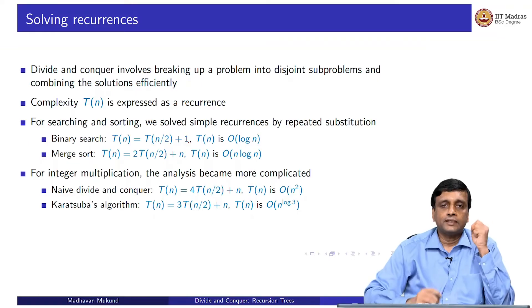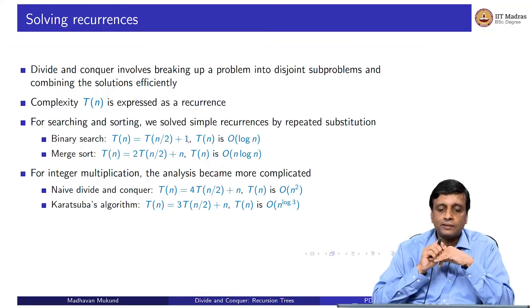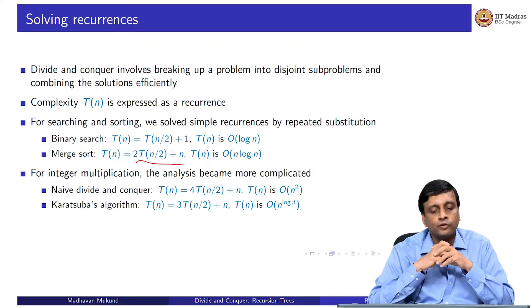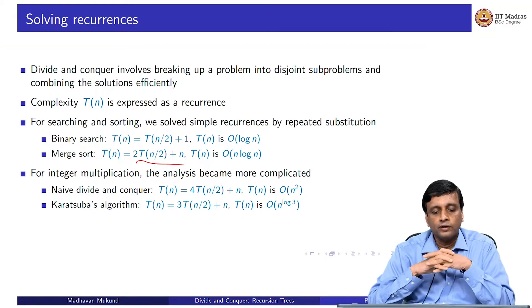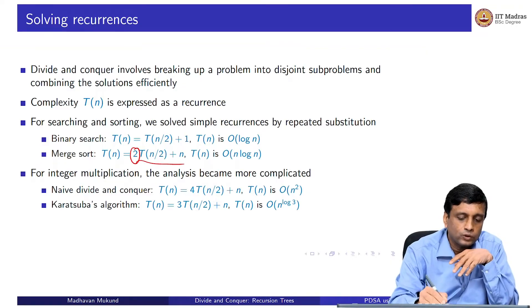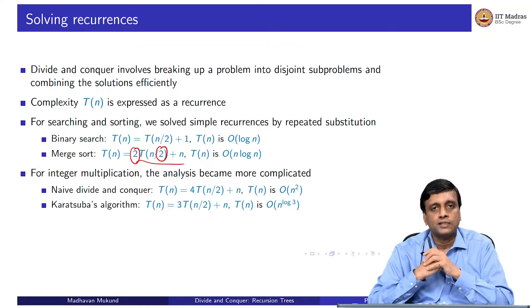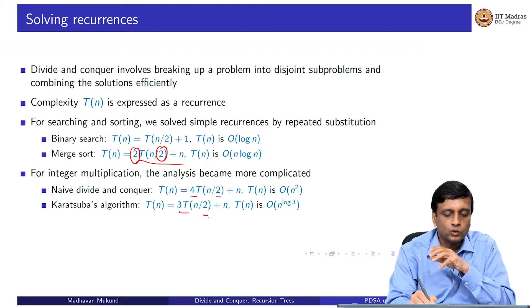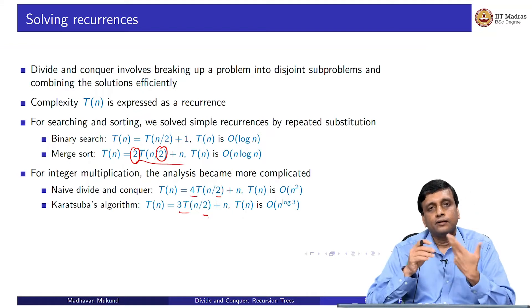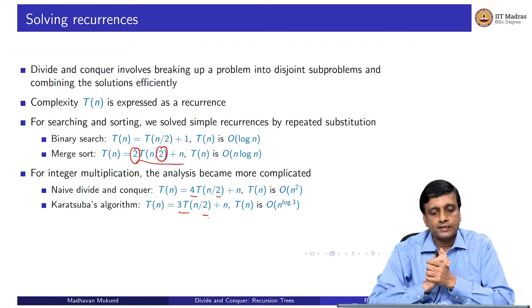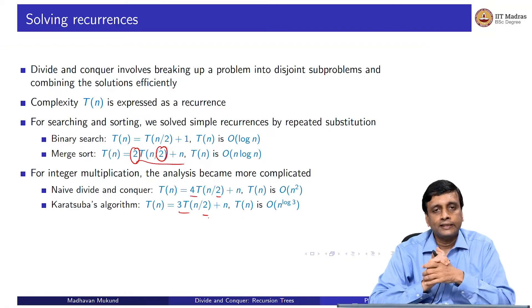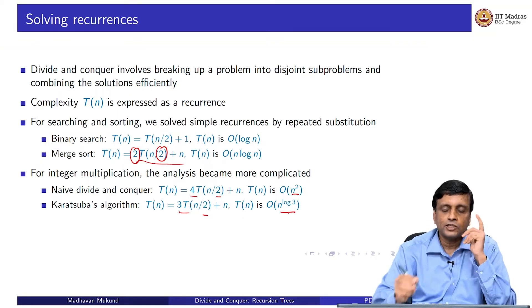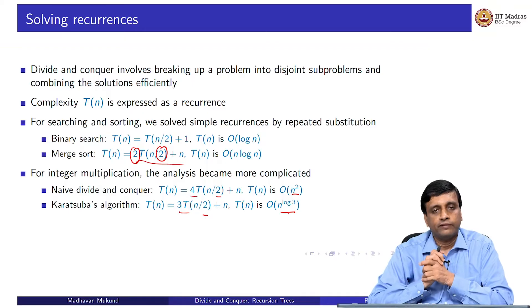When we looked at integer multiplication, the problem became a little messy because the terms became more complicated. For the naive divide and conquer, we had 4·T(n/2), and for Karatsuba's algorithm we have 3 and 2. We ended up saying that the naive algorithm takes O(n²), while Karatsuba's algorithm gives a very strange quantity: n to the power log 3, which is approximately n^1.59.